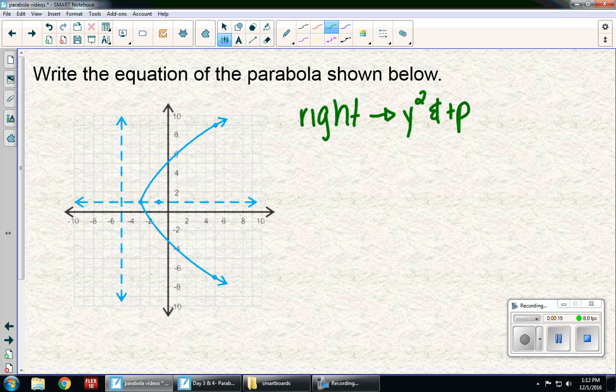But if you notice, this parabola is a little bit different. The vertex is no longer at the origin. My vertex this time is negative 3, 1.